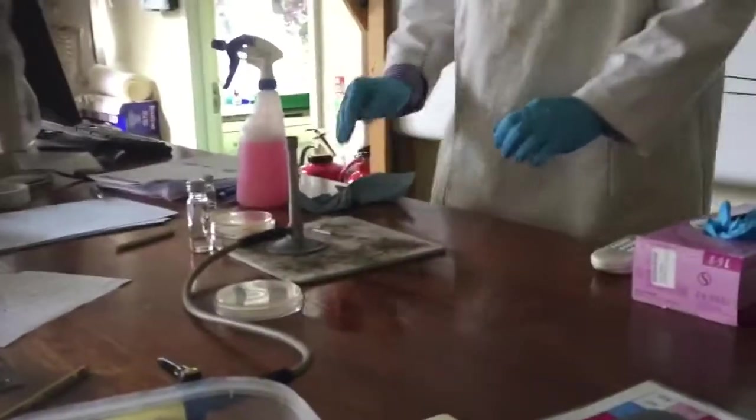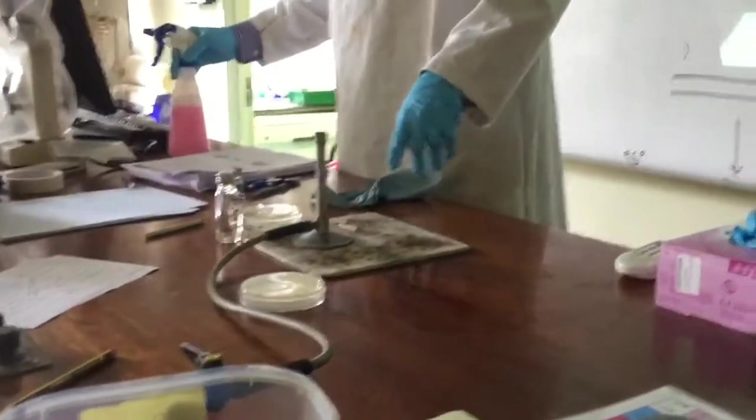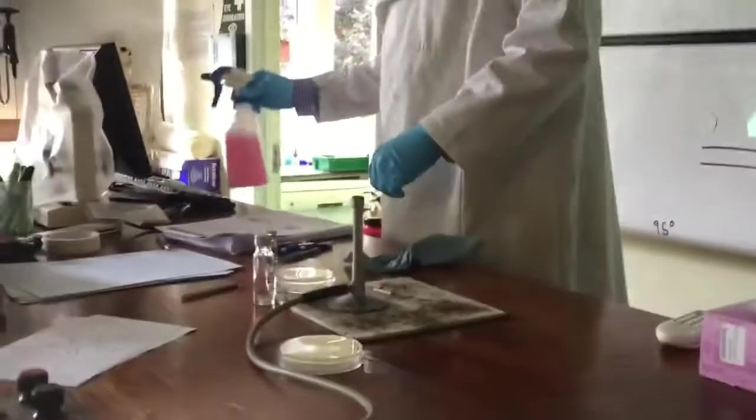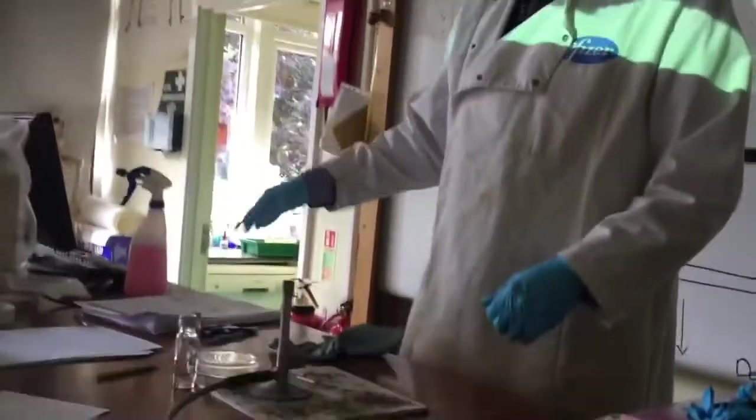This is just a disinfectant. If you used ethanol, you'd have to make sure you did it before you turn the Bunsen burner on. That's a safety problem, making sure you kept ethanol away. This isn't ethanol though. It's just basically a bleach solution.